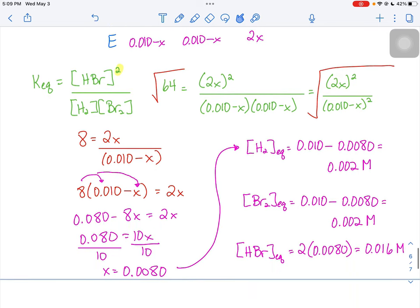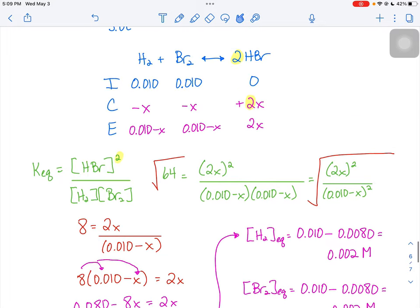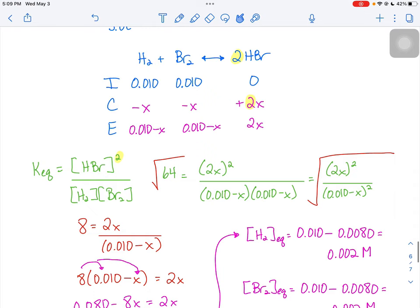We distribute that 8. We move some stuff around, solve for X, and we get 0.0080 for X. But what did X represent again? Look back at your ICE table. X was representing the changes for hydrogen and bromine.